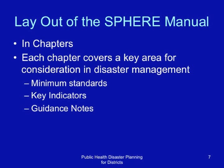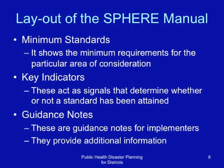Please acquire a copy of the SPHERE manual. The minimum standards section shows the minimum requirements for the particular area of consideration. The key indicators act as signals that determine whether or not a standard has been obtained. The guidance notes provide additional information that is useful for actual implementation of the standards.